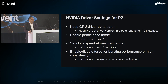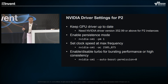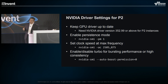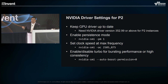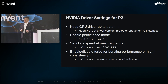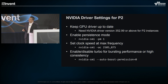For NVIDIA driver settings on P2 instances: many people migrate workloads from G2 to P2 without upgrading GPU drivers. For P2 to perform well, you need NVIDIA driver version 352.99 or above to use GPU Direct capabilities. Enable persistence mode by running NVIDIA-smi commands — without this, you'll observe a long delay as the driver initializes. You can also set the clock speed to maximum frequency and enable or disable turbo for burst performance or high consistency, all through NVIDIA-smi commands.